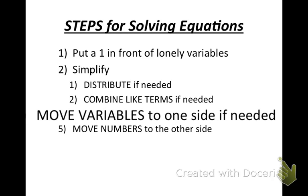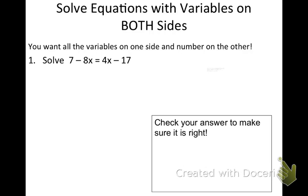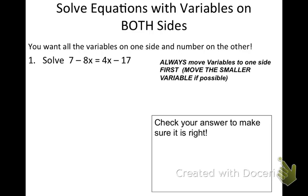Let's look at the first example: 7 minus 8x equals 4x minus 17. I don't see any lonely variables where you need to place a 1 in front. Looking at the separate sides of the equal sign, I don't see any distribution that needs to be done or combining of like terms. So now we're just going to move on to collecting the variables on one side.